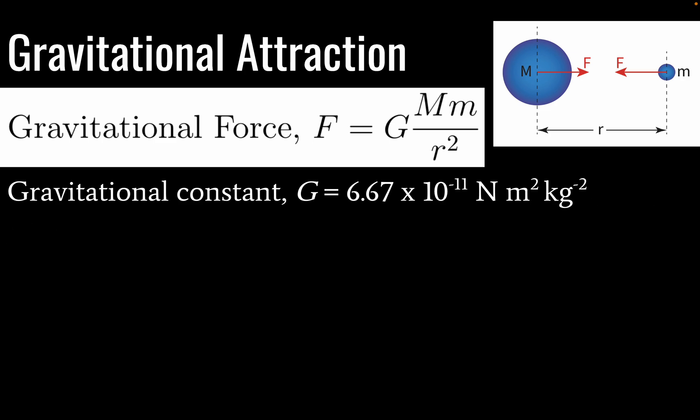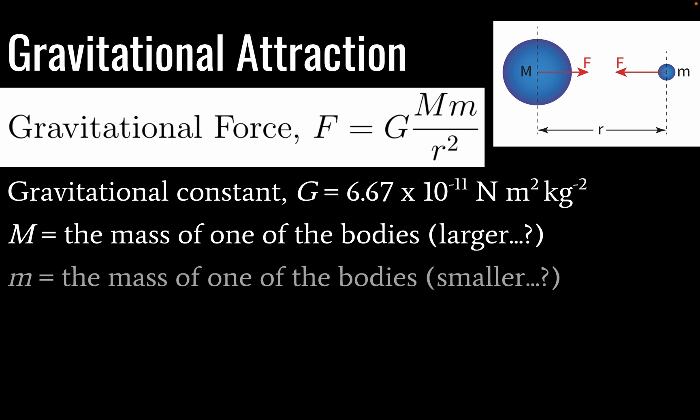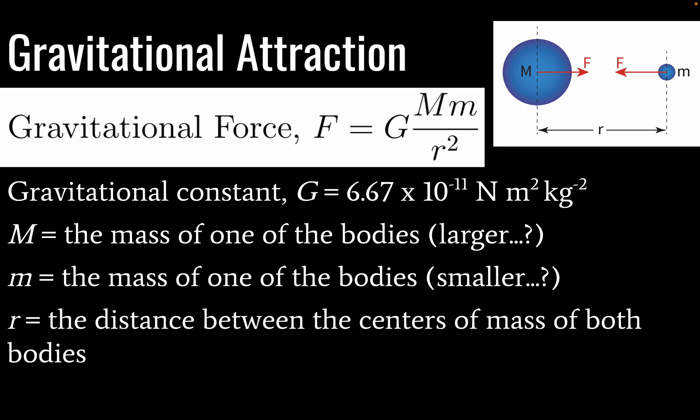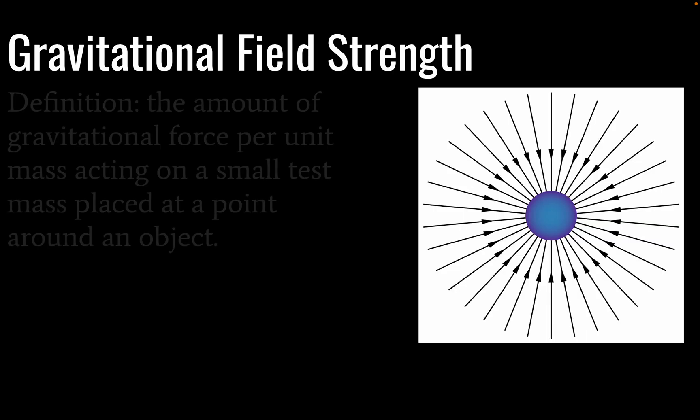If you wanted to, you could just derive that unit right here by dividing both sides of the equation by the inverse of this value. So capital M is the mass of one of the bodies, the larger one. Small m is the mass of the other body, the smaller one. And R is the distance between the centers of mass of both bodies.